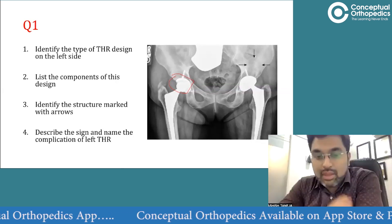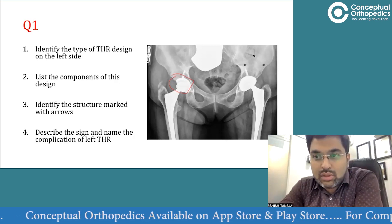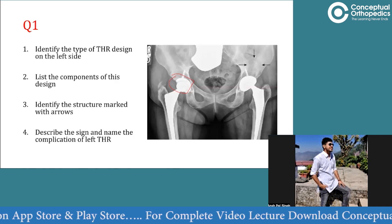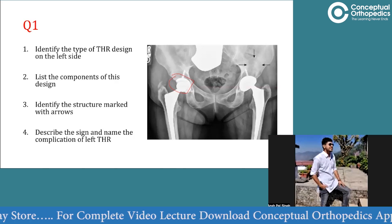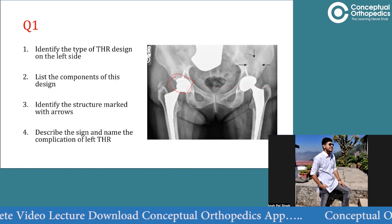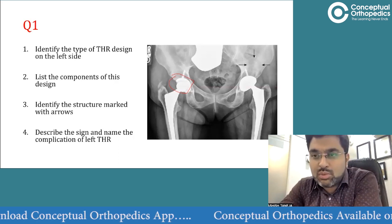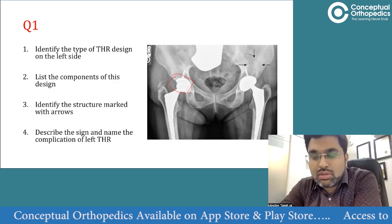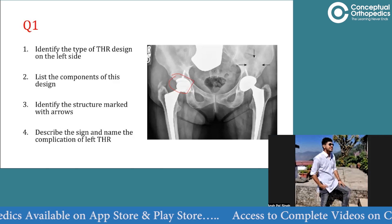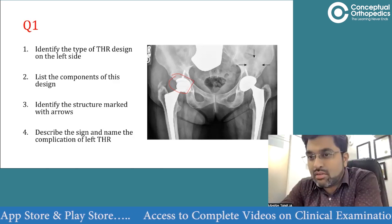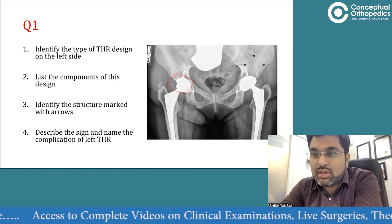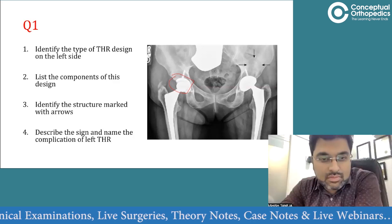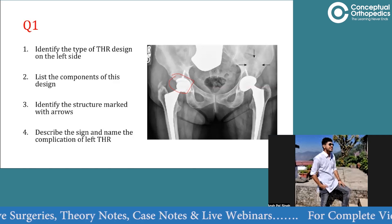There is a structure marked with three arrows on the left side. It is a circular, hemispherical structure with decreased lucency - decreased opacity compared to the surrounding structures. This could be the false acetabulum where the hip might have been articulated before, or it could be the poly liner.